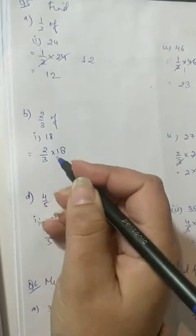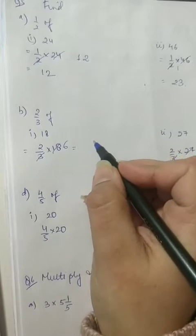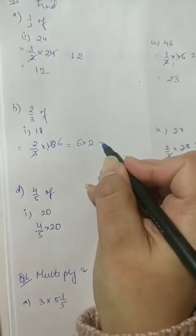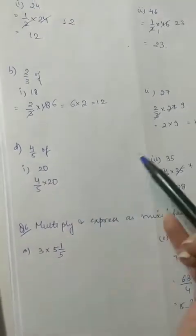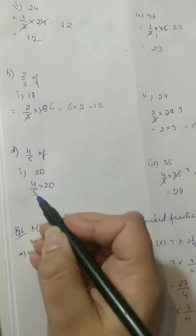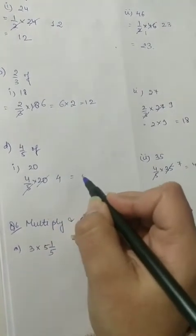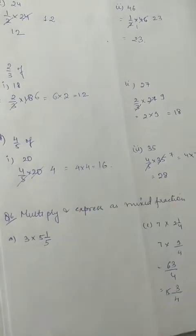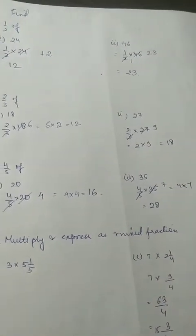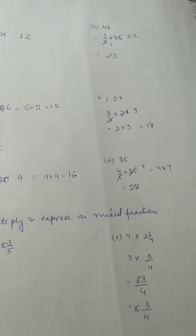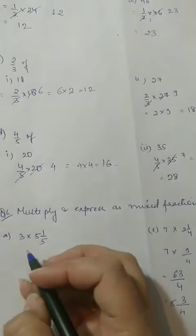यहाँ पे 2 third है — 2 third of 18 करना है. 3 sixes are 18. ठीक है, 6 into 2 gives us 12. Essay 27 — now D part is 4 by 5 of these two numbers: 4 by 5 of 20. Common factors — हमें पता है 5 fours are 20 — this is 4 into 4 which is 16. ठीक है, ऐसे हमने find out कर लिया है. Two questions I've already done because यह बहुत ज़्यादा repetition है. अगर आपको नहीं समझ आया है, you can ask me, but these are quite easy otherwise.